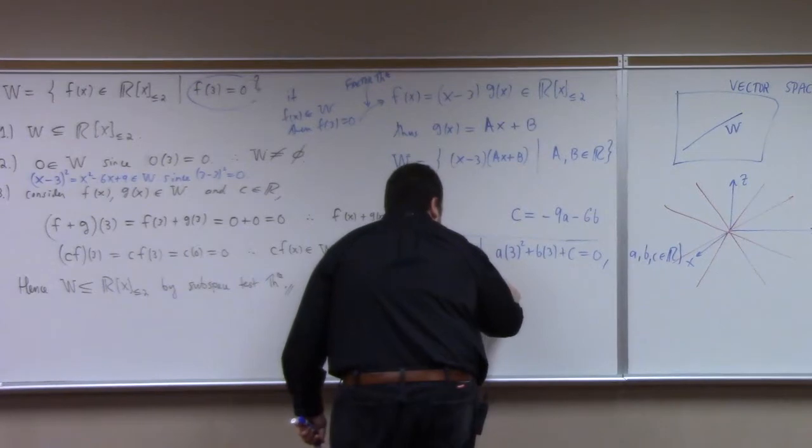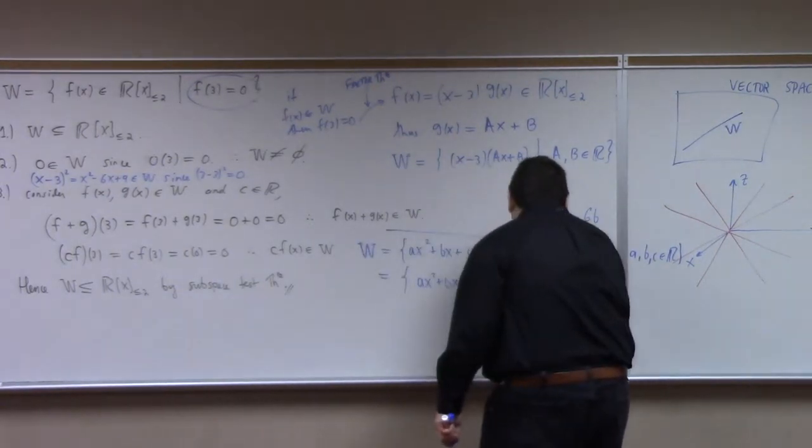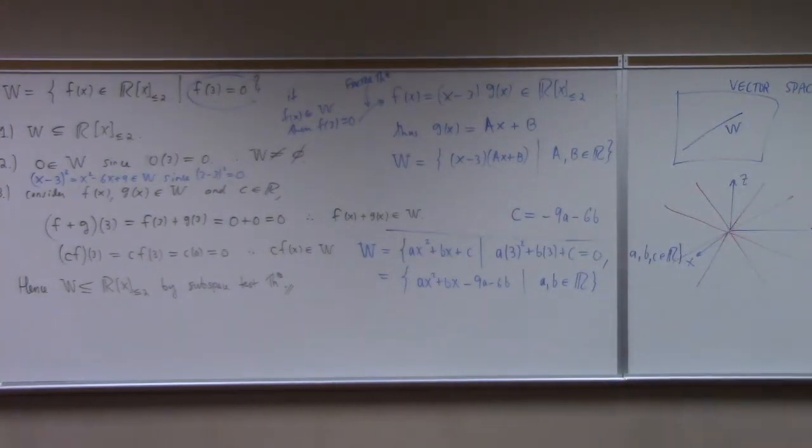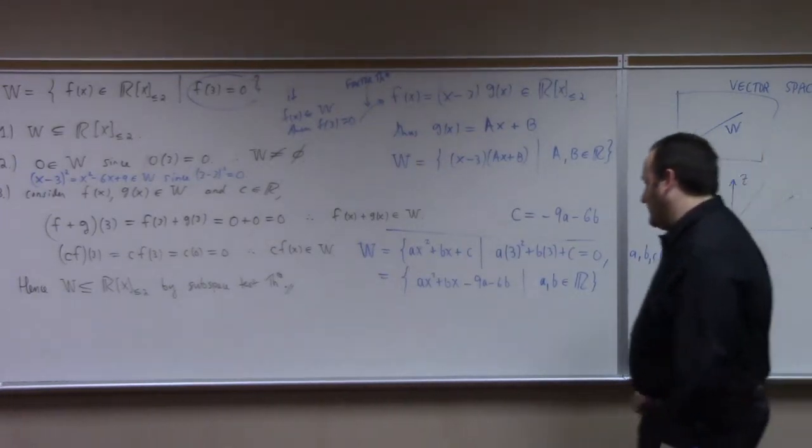Minus 9a minus 6b such that a and b are real numbers, which then we could do some sneaky stuff like... I don't know. How about this?